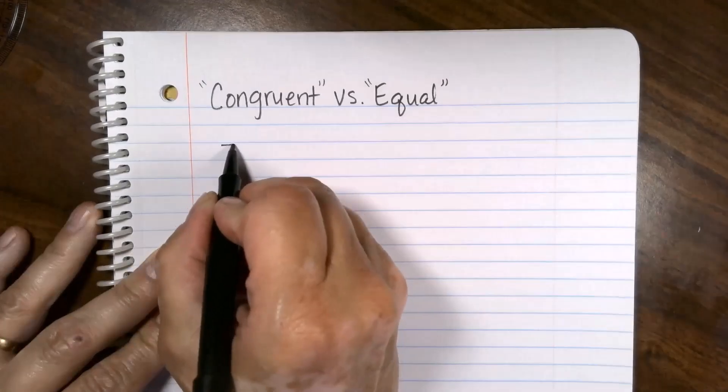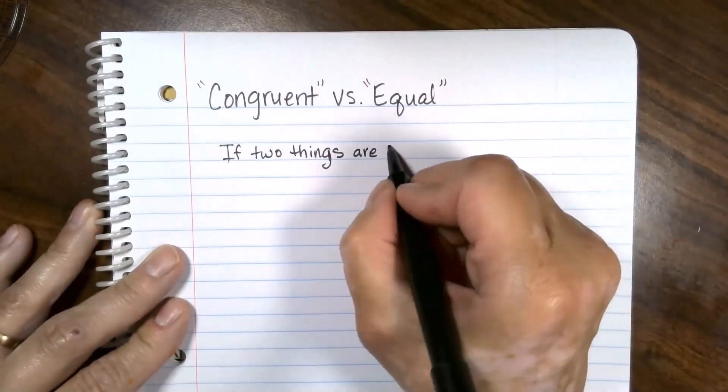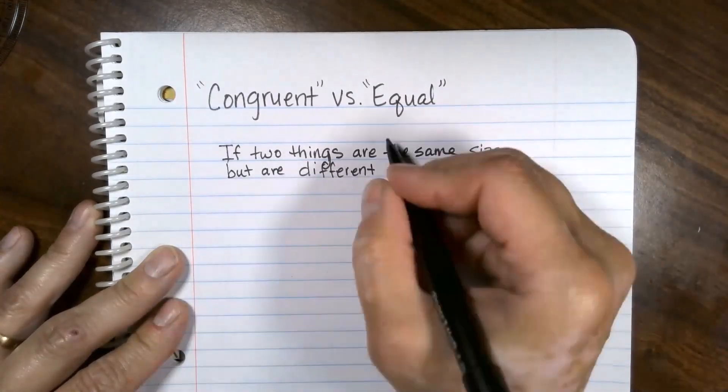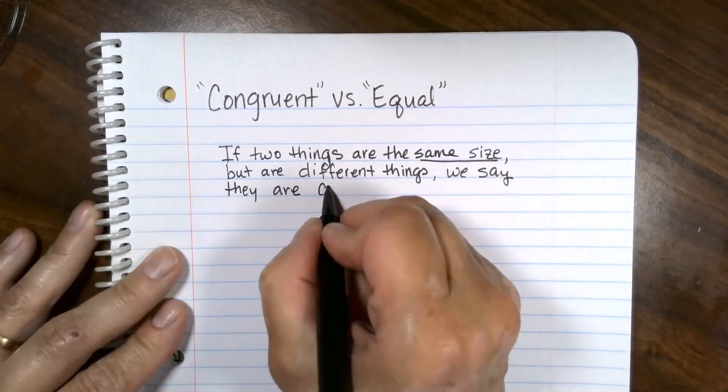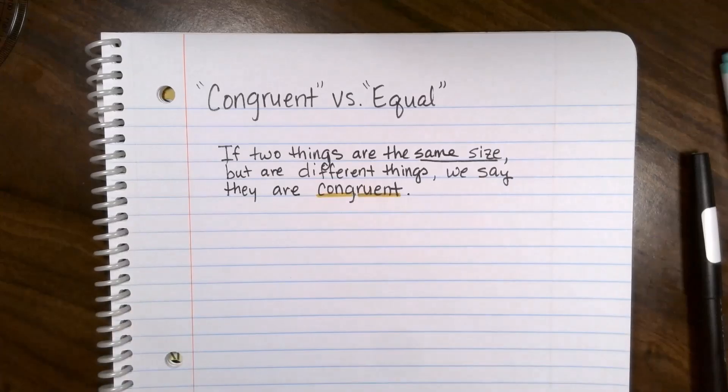They are almost the same, but there are some subtle differences. If two things are the same size but are actually two different things, we say that they are congruent. Let's not think about this in math. Think about this in the real world.